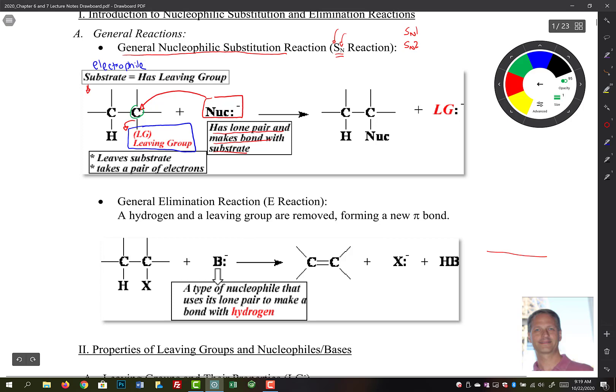That's the carbon that had the leaving group on it. So there's carbon right there. And that will be connected to your nucleophile right here. And then we booted off our leaving group. And notice here too, that the leaving group takes that lone pair with it, and it has a negative charge.